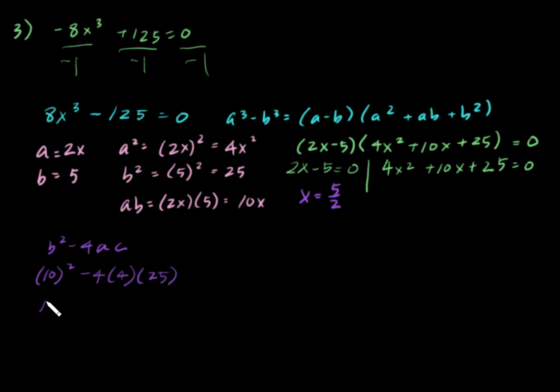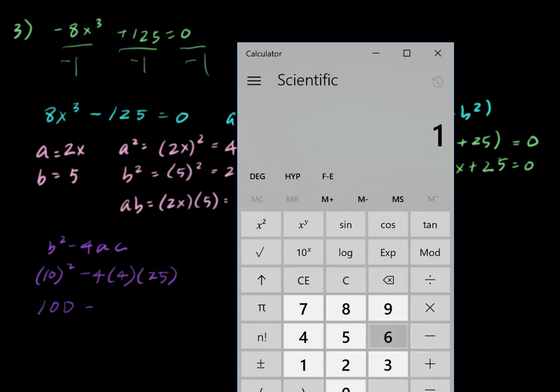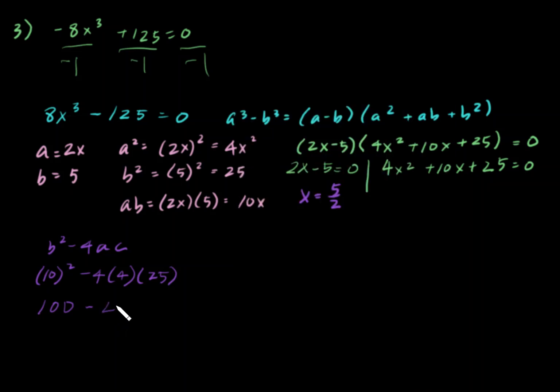10 squared minus 4 times 4 times 25. That's 100 minus 16 times 25. Let's go ahead and do that on the calculator. 16 times 25 equals 400, and that's a negative 300. So, we know that that's not going to work out.